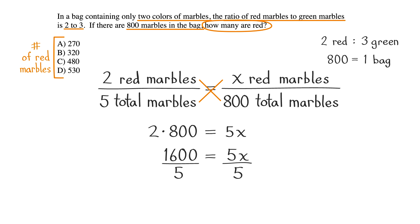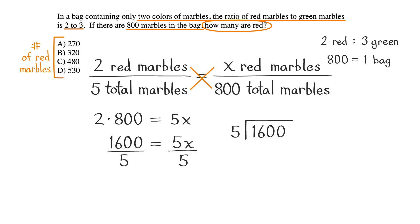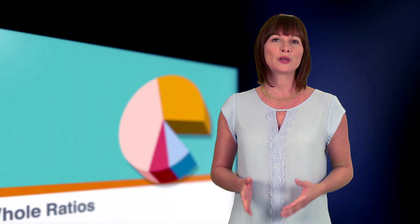Since one of the math sections doesn't allow a calculator, let's practice our long division. 1600 divided by 5 is 320. So we have x equals 320. B is our correct answer. X was our variable for the total number of red marbles, and now we have our answer.